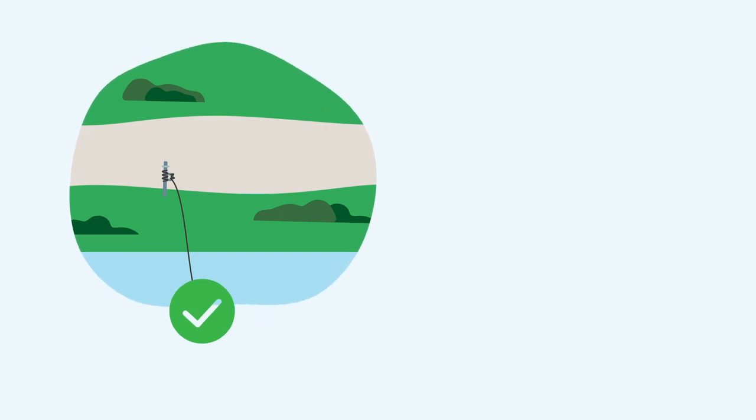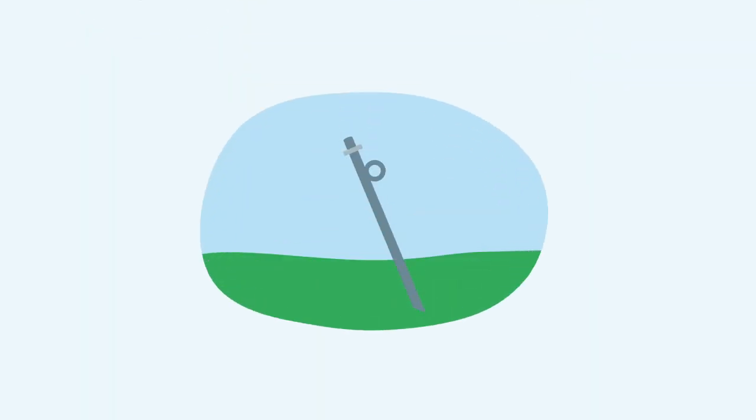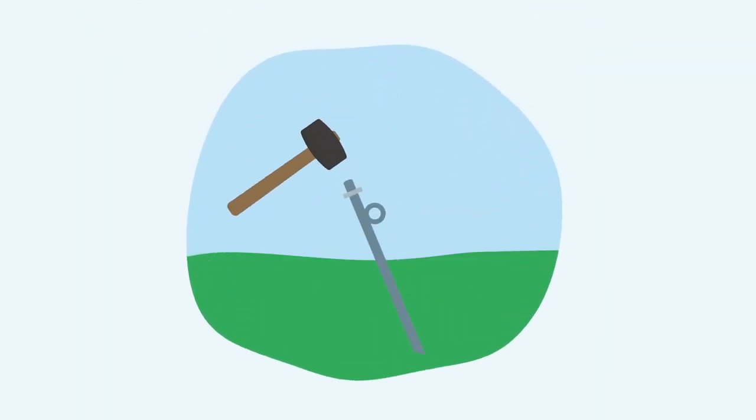Position the stakes as far from the bank as you can, but don't tie your ropes across the towpath. Knock them in to about three quarters of their length and make sure they're firm. Mark them so they are clearly visible to other towpath users.